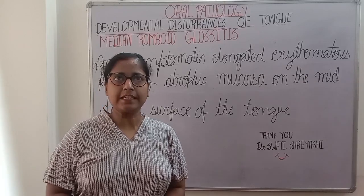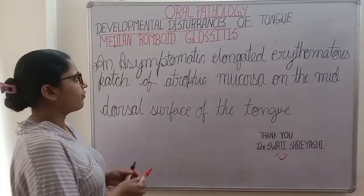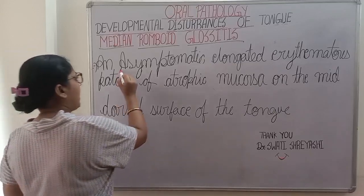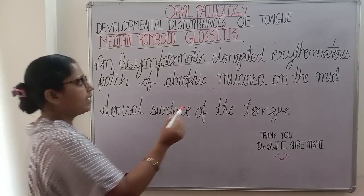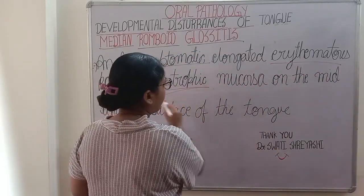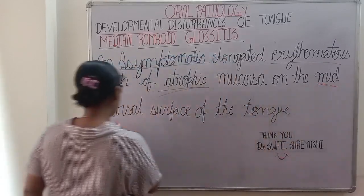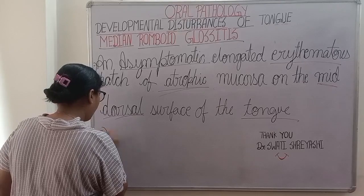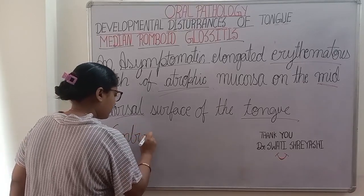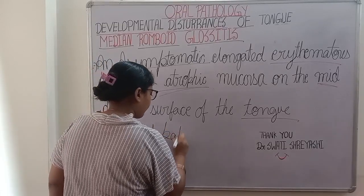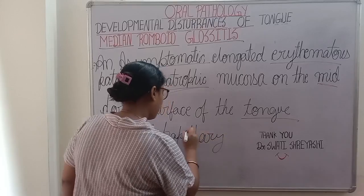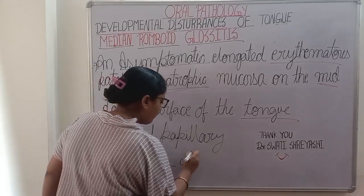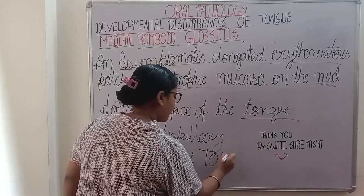Hello everyone, I am Dr. Swati. Today we are dealing with developmental disturbances of the tongue. Median Rhomboid Glossitis is an asymptomatic elongated erythematous patch of atrophic mucosa on the mid dorsal surface of the tongue. Next is the Central Papillary Atrophy of Tongue.